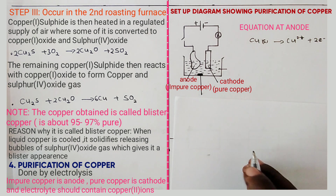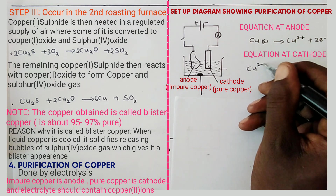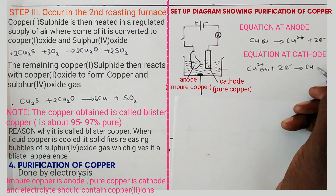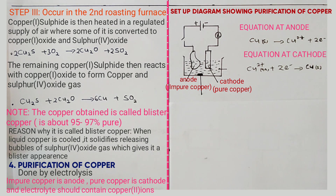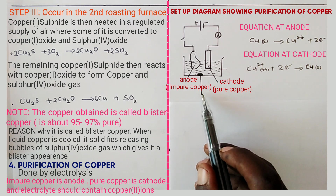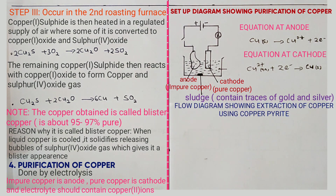The ions that migrate to the cathode are hydrogen ions and copper ions. The ions discharged at the cathode are copper ions, because copper ions are lower than hydrogen in the electrochemical series. The equation at the cathode is: Cu²⁺ + 2e⁻ → Cu(s). Note that traces of gold and silver collect as sludge at the bottom of the electrolytic cell. The flow chart below shows the full extraction of copper using copper pyrites.